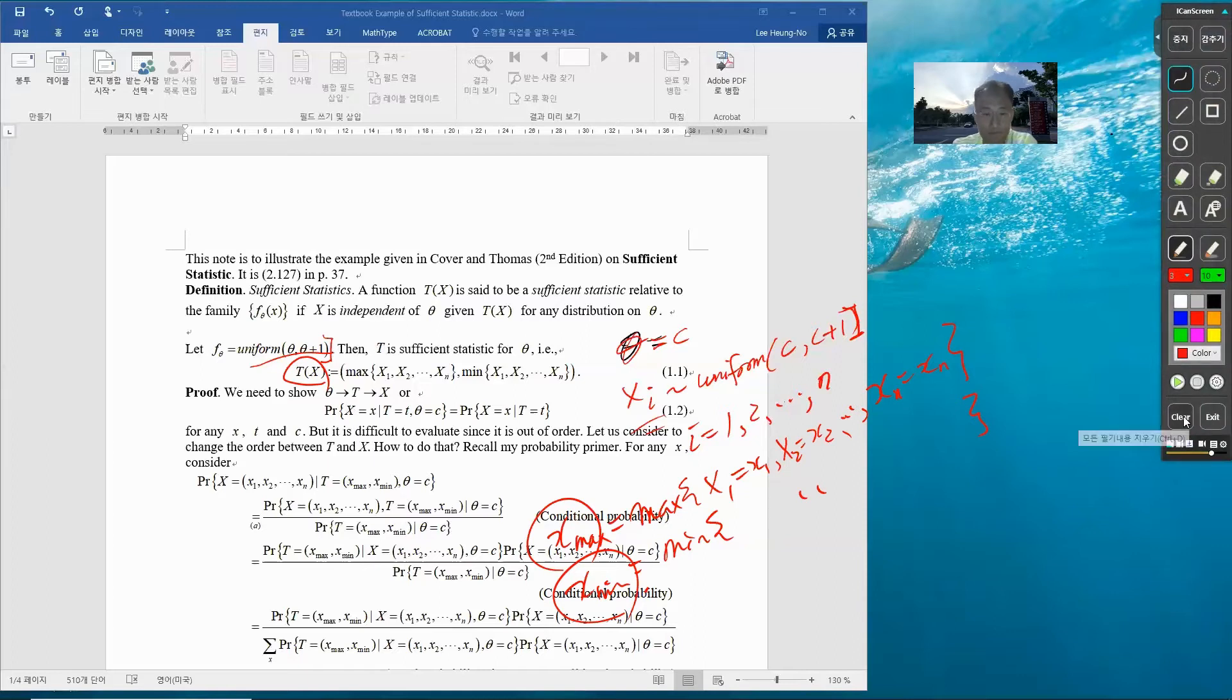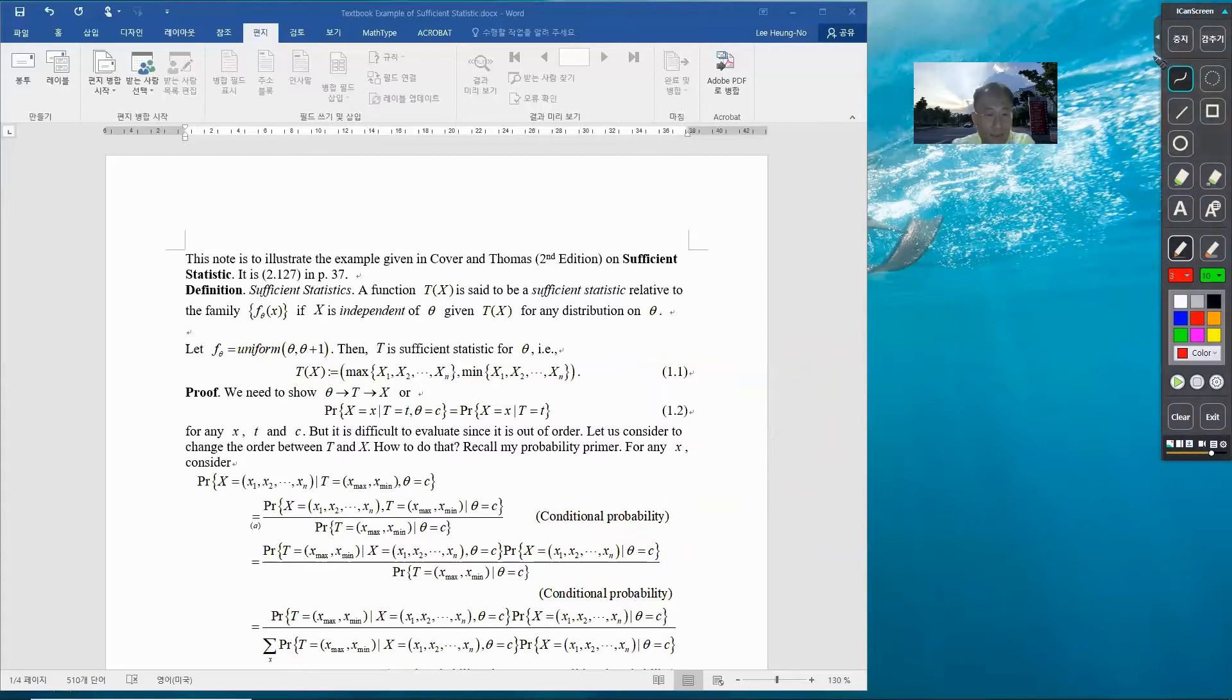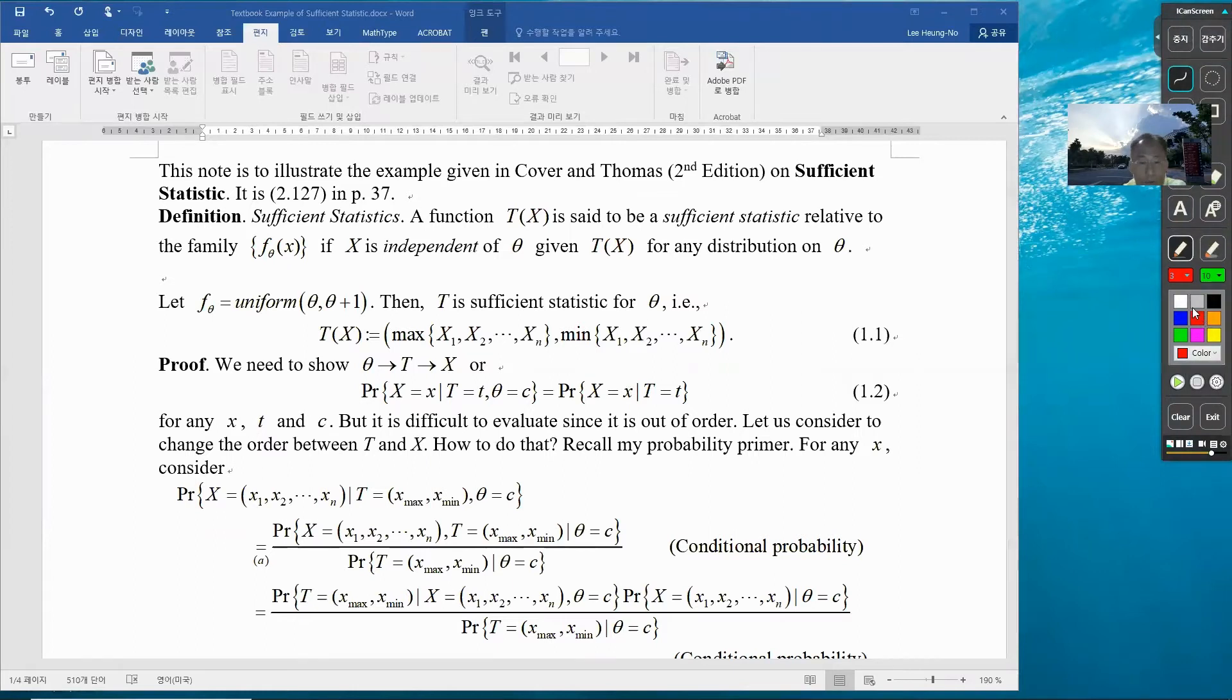We can easily prove that this direction is a Markov chain, but in order for T to be sufficient statistic, we need to show this as well. So that is our objective: show theta to T to X Markov chain. We have to show this for each and every x, t, and c.